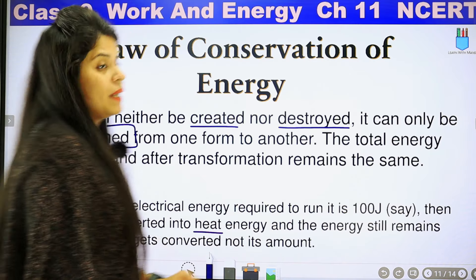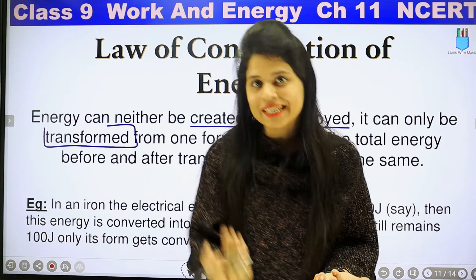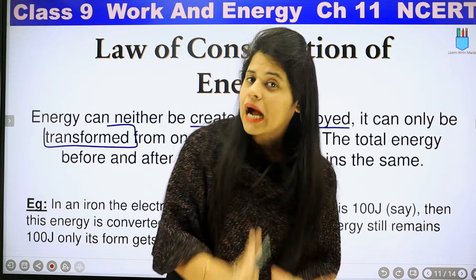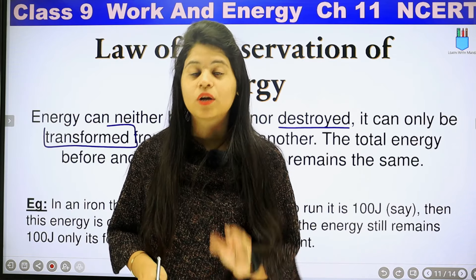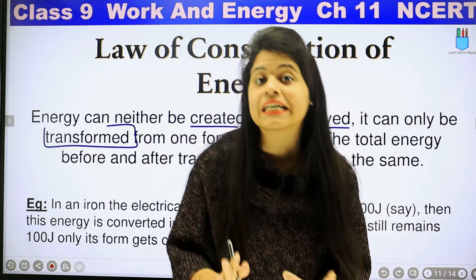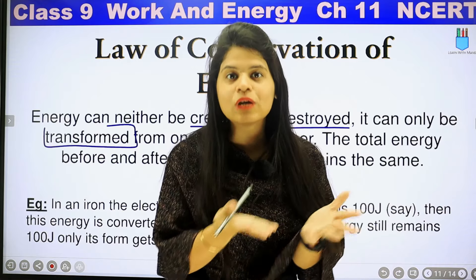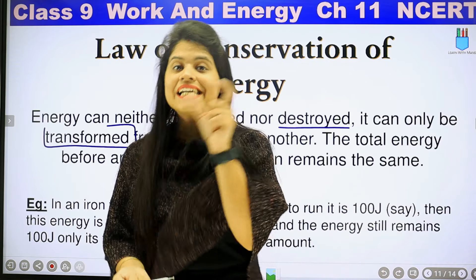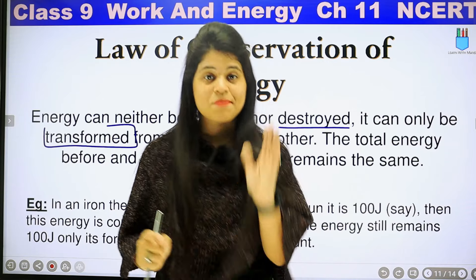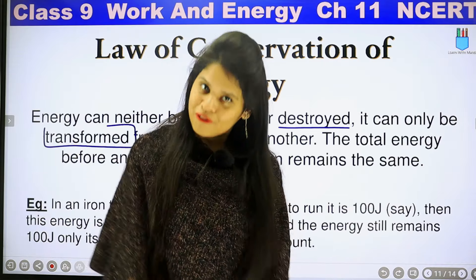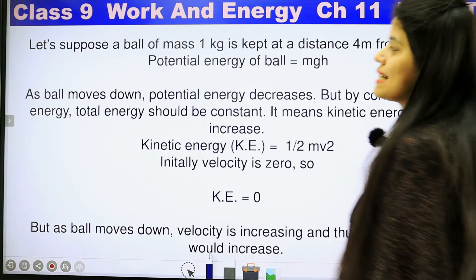Only its form gets converted, not its amount. We have a press — we have to do some work with it, so let's suppose we put in 100 joules of electrical energy. This electrical energy is converted into heat energy, but it will still be 100 joules.